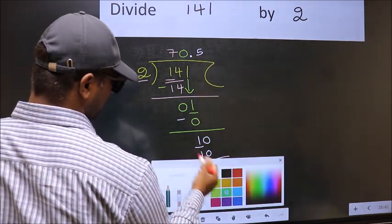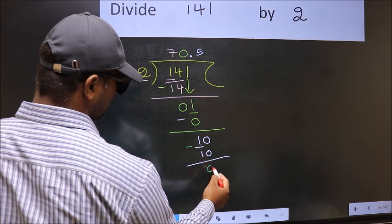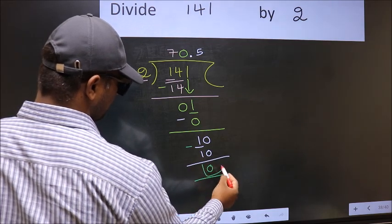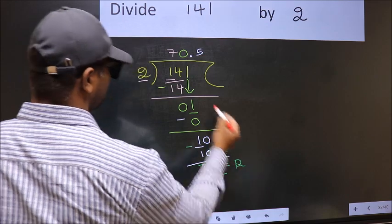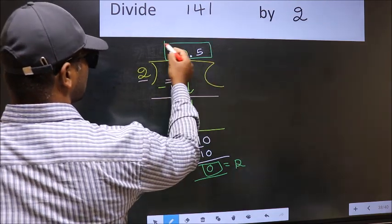Now you should subtract. 10 minus 10, 0. So this is our remainder and this is our quotient.